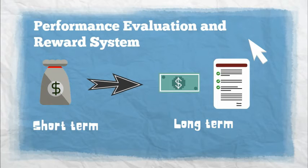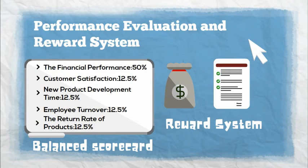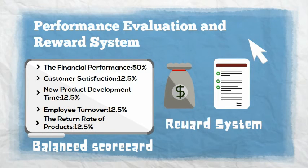The revised reward system contains cash bonus and stock options. Whenever the organization achieves strong performance, the staff would be provided with a package of cash bonus and stock options together. In addition, instead of attaching the bonus to profits, we add more non-financial performance measurements to balance the scorecards, which include financial performance, customer satisfaction, new product development time, employee turnover, and return rate of the product. Each category is ranked between 1 and 10, the higher the better. Finally, the score is calculated on average and the matching bonus is determined.